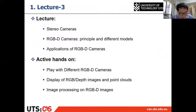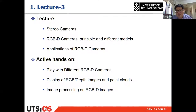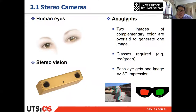We didn't introduce this in lecture three because we had limited time. The stereo camera is the camera that we can observe and get the depth information properly and naturally, before we had RGB-D cameras. The stereo camera is mostly similar to the human eyes, as I introduced before.